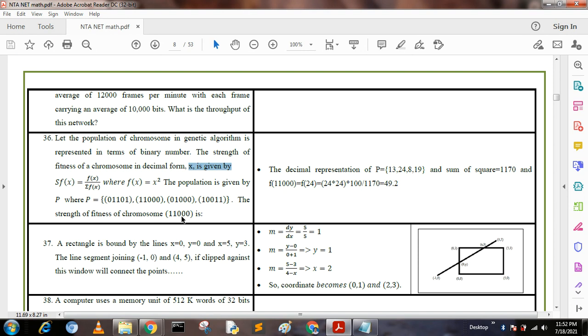The answers would be written in decimal representation of P. The binary representation of P we convert into decimal values: 13, 24, 8, and 19. We find the sum of squares: 13² + 24² + 8² + 19² = 1170. We put this value in the equation for fx and get the result 14.2. This question came in a previous UGC NET computer science exam.